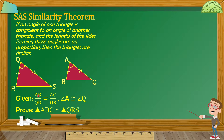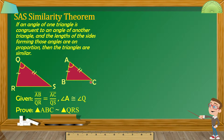Given: segment AB over segment QR is equal to segment AC over segment QS — that is the proportion we mentioned. And at the same time, angle A is congruent to angle Q. We need to prove that triangle ABC is similar to triangle QRS.